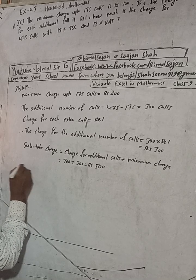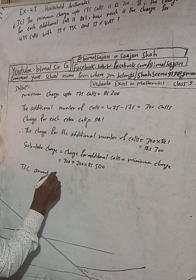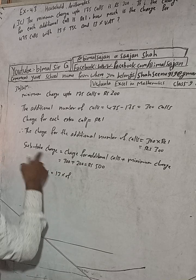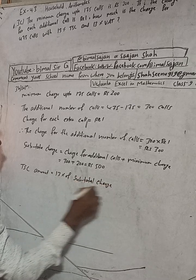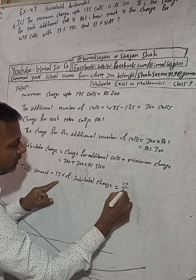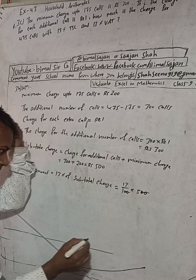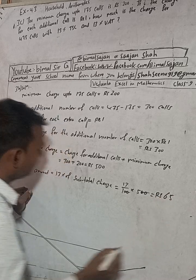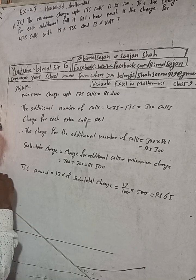Now, 13% TSE — Telecom Service Charge amount — is equal to 13% of total charge. That is 13 divided by 100 into 500, which equals Rs.65. So the TSE amount is Rs.65.